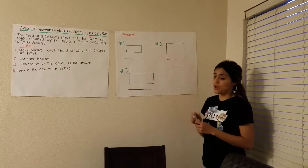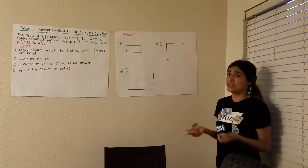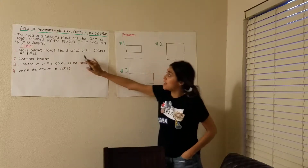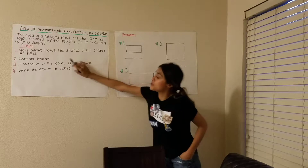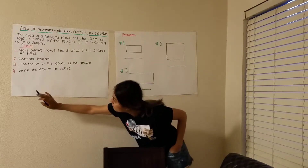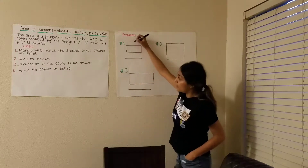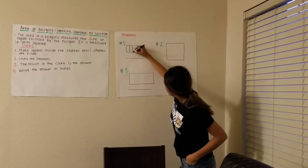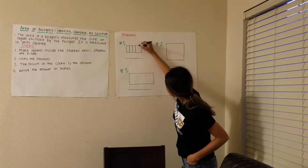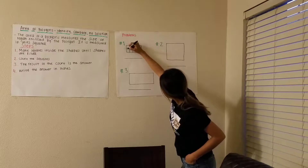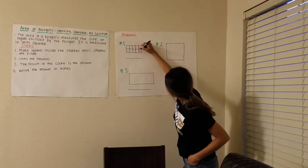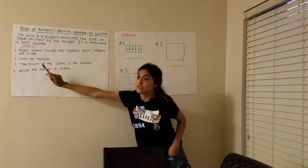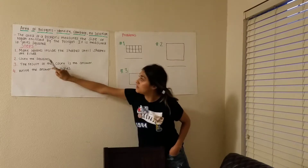I have three problems right here and it's really simple. Step one: make the squares inside the shapes until the shapes are filled. Okay, I have my squares there. Step two: count the squares.